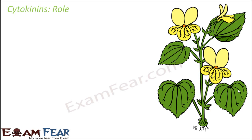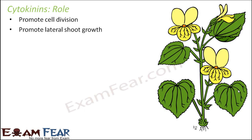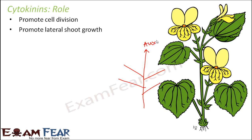Let us discuss the roles cytokinins play. They promote cell division, and that is why they are known as cytokinins. They also promote lateral shoot growth. This is why they complement auxin, because auxin helps promote vertical growth. But when you talk about the overall growth of a plant, you need both vertical and lateral growth. Auxins promote vertical growth but not lateral growth, so cytokinins promote lateral growth. Together, auxin and cytokinin can give very good growth to the plant.